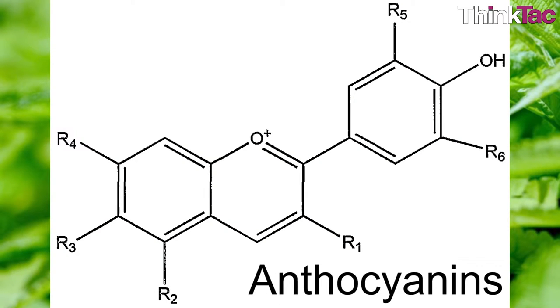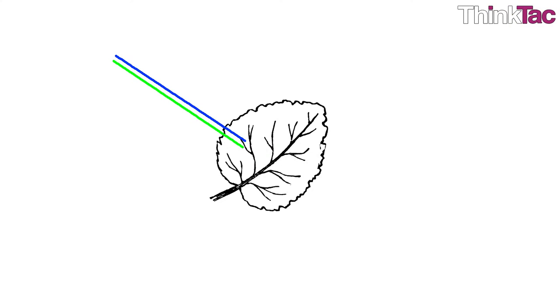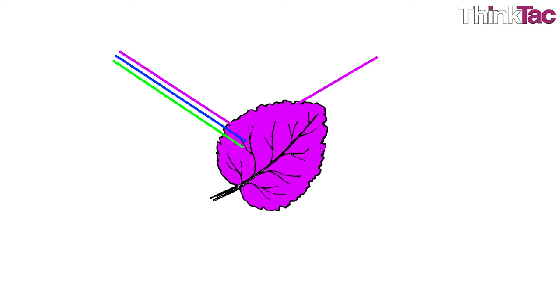They absorb the blue, blue-green and the green lights. When leaves have higher concentration of anthocyanins, that is they absorb green light and reflect the purple and red, compared to the other two, they appear purple or red to our eyes. So plants having less chlorophyll also undergo photosynthesis, but at a higher rate in the shade as compared to in the sunlight.